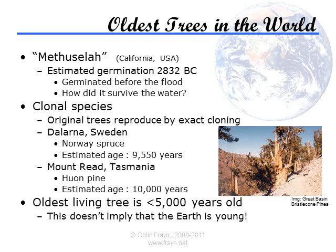Clonal trees are a bit more complicated. These are not strictly the same organism existing over thousands of years, but rather clones of an original organism that reproduce vegetatively, not sexually, from an original, unchanging rootstock. This means that each individual is genetically identical to the last. These colonies are dated by analysing the remains of wood that is found near to the original tree. If it has the same genetic makeup, then it is part of the same colony. Wood can be dated using carbon-14 and dendrochronological methods. Some of these colonies have ages approaching 10,000 years, which is clearly much older than the age of the Earth according to young Earth creationists.